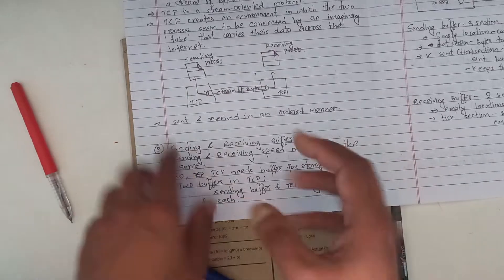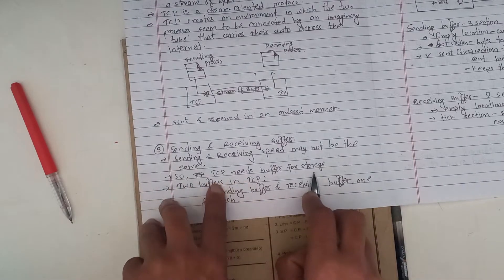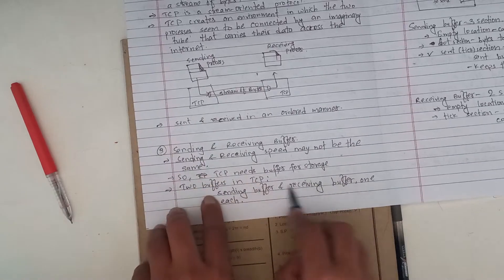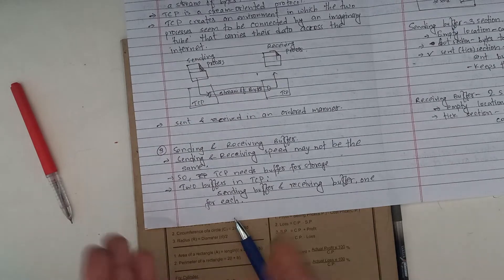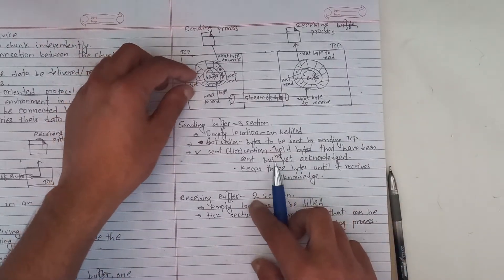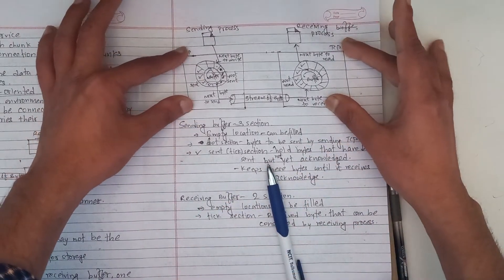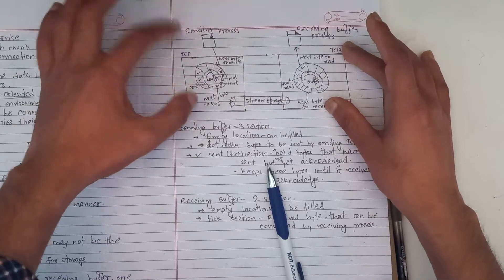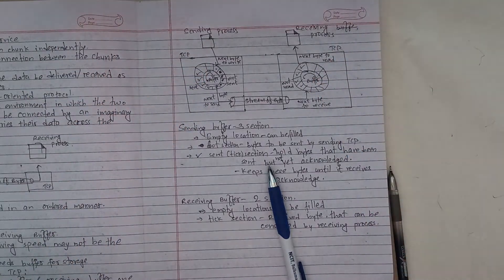The send and receive speed may not be the same, so TCP needs a buffer for storage. There are two buffers for each TCP connection: a sending buffer and a receiving buffer. You can see both the sending buffer and the receiving buffer.